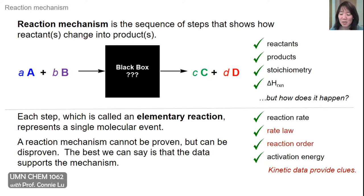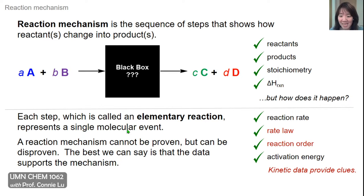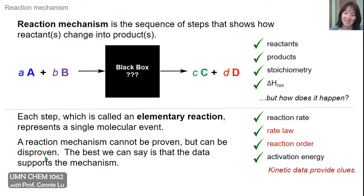What kinetics actually does is provide clues about what's going on in the black box. For a reaction mechanism, you can break that into a sequence of steps where each step is called an elementary reaction. These reactions represent a single molecular event. Unlike an overall chemical reaction, which can have many steps, an elementary reaction truly represents a single step. One important thing to keep in mind is that as scientists, we cannot prove a reaction mechanism. However, we can disprove bad mechanisms if the data doesn't fit.